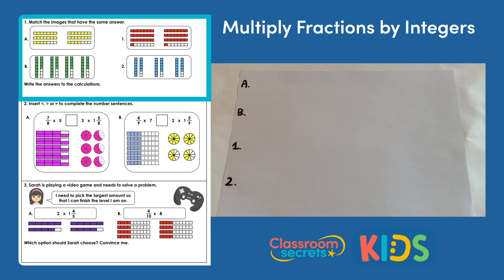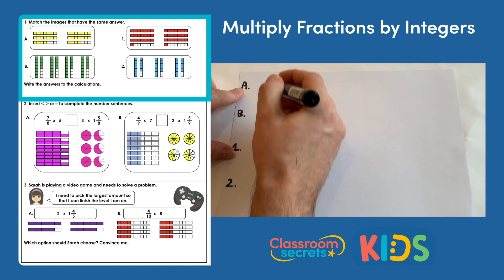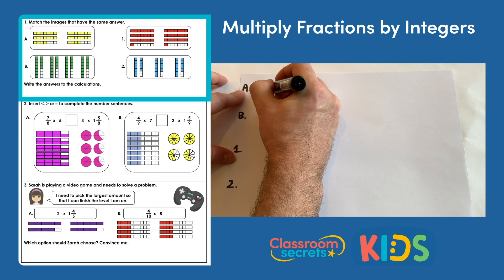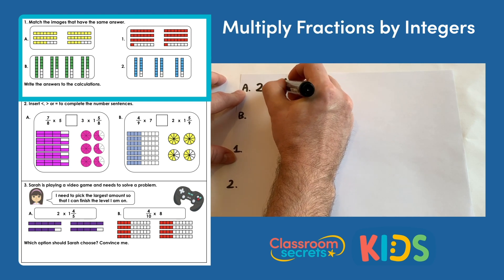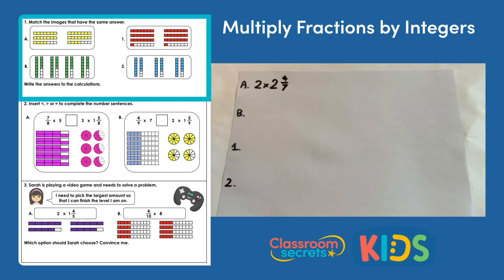If we look at a, we have two lots of two and four sevenths. On the left hand side we've got two and four sevenths, and we've got the same on the right hand side, so that's two lots of two and four sevenths. So if we write that as a calculation, for a we have two multiplied by two and four sevenths.